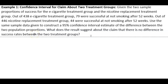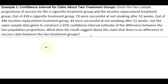Example 1: Confidence Interval for a Claim About 2 Treatment Groups. Given the two sample proportions of success for the E-Cigarette Treatment Group and the Nicotine Replacement Treatment Group: out of 438 in the E-Cigarette group, 79 were successful at not smoking after 52 weeks. Out of 446 in the Nicotine Replacement group, 44 were successful after 52 weeks. Use the sample data to construct a 95% confidence interval estimate of the difference between the two population proportions. What does the result suggest about the claim that there is no difference in success rates between the two treatment groups?